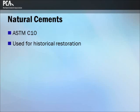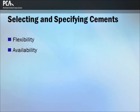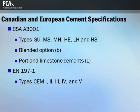When specifying cements for a project, the availability of cement types should be verified and the specifications should allow for flexibility in cement selection. CSA A3001 is the Canadian standard for cement and cementitious materials. If the cement is a blended cement, a lowercase 'b' is appended to the designation. EN 197-1 is the European cement standard. Only Type CEM I is Portland cement; the remainder are blended cements.